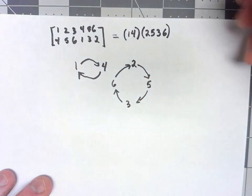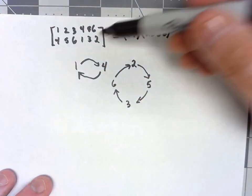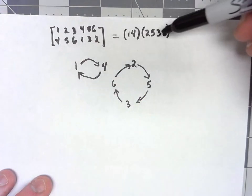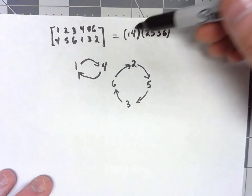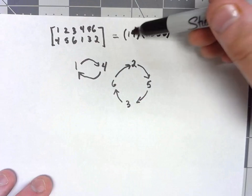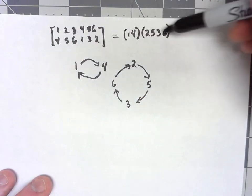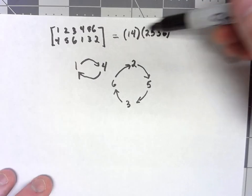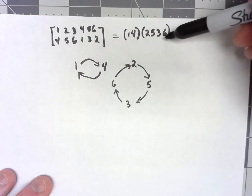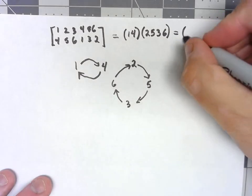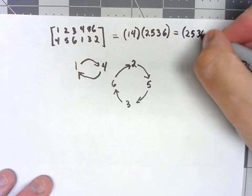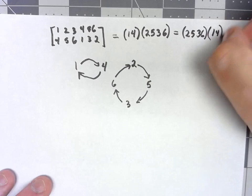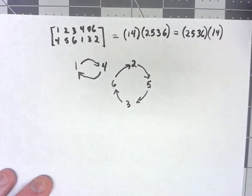Now every permutation can be written this way, and it will always be the same set of cycles for a given permutation. However, the order doesn't have to be that way. I could just as easily said this is 2, 5, 3, 6 times 1, 4, and it would do the same thing.